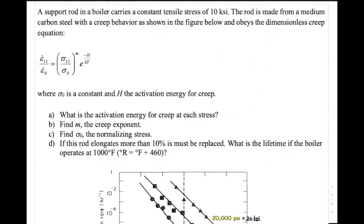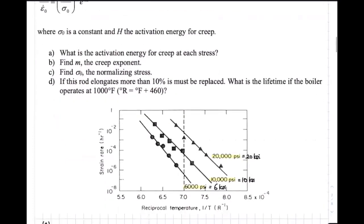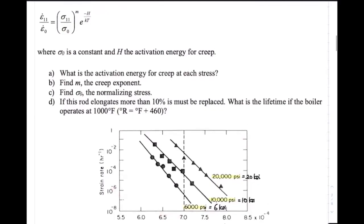That already answered my question, because the problem I was having was the time I was getting was like 1000-something hours, which seemed small. Students often have problems reading the log scale because the small tiny differences result in very large value differences. So honestly, if the answer is 1000 hours and your answer is like 1200, something like that, I would say it is okay.